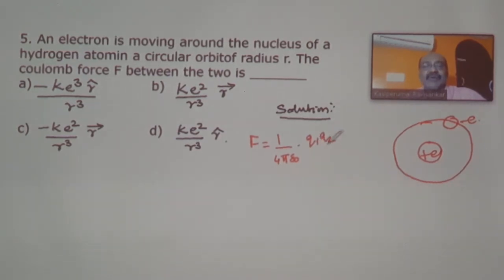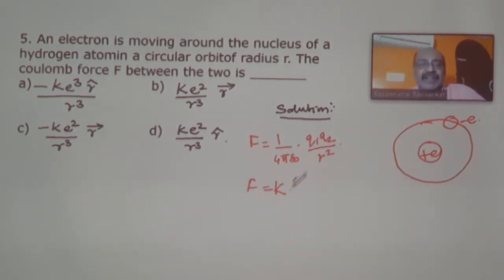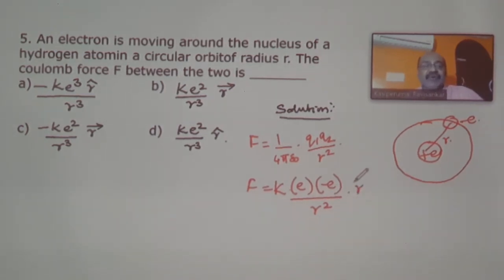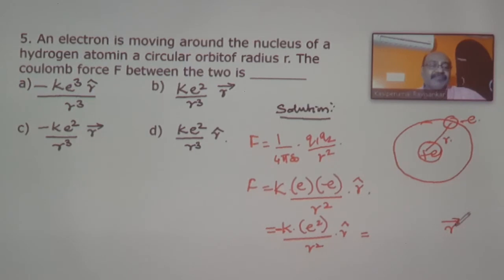The Coulomb force formula is F equals (1/4πε₀) times q1 times q2 divided by r squared. We can write (1/4πε₀) as k. The charge of the nucleus is plus e and the electron is minus e, so F equals k times e times (minus e) divided by r squared, giving minus ke² divided by r squared.